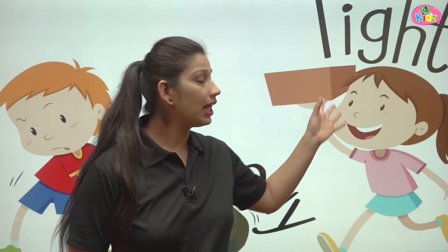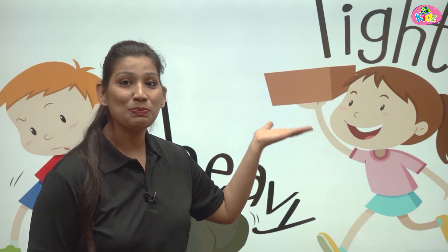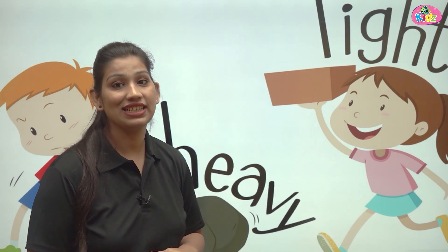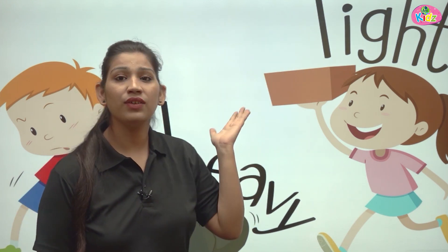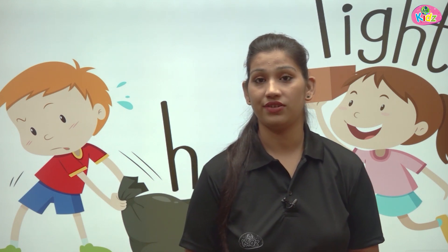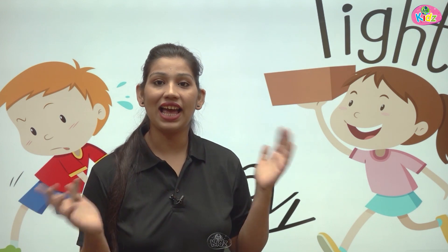Here the girl has a box and she is very happy to pick it up, which means it is light. Usne to apne ek haath se usko pick kar rakha hai — matlab wo halka hai. Aur is boy ko dono haath se usko drag karne ki koshish karni pad rahi hai, which means it is heavy. Heavy matlab hota hai bhaari, light matlab hota hai halka. That's all for today's concept.